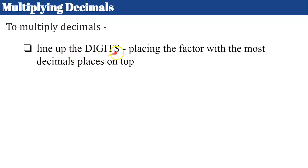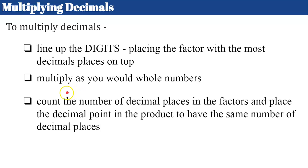To multiply decimals, we're going to line up the digits, not the decimal point. So when we multiply and when we divide, we're not going to pay attention to lining up decimal points, we're going to line up digits. We're going to place the factor with the most decimal places on top and multiply as we would whole numbers. Then when we're done multiplying, we're going to count the number of decimal places in the factors, in both values, and place the decimal point in the product, the answer, to have the same number of decimal places.